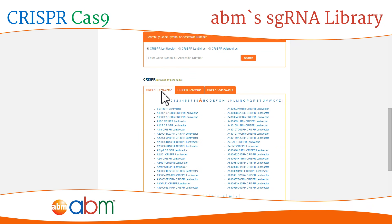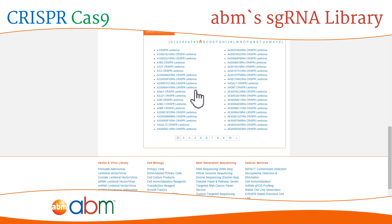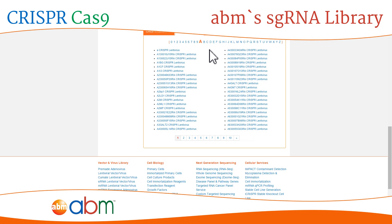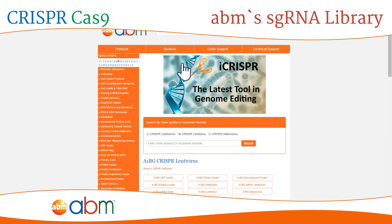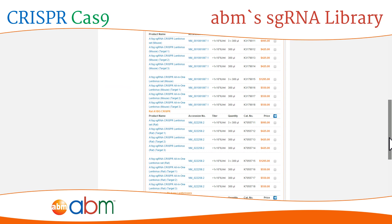Our sgRNAs are provided in different formats, including lentiviral vectors, packaged lentiviruses, adenoviruses, and even AAVs, which will be added soon. After choosing the vector you'd like to use for sgRNA delivery, the search bar allows you to search by gene symbol or accession number, or you can use alphabetical sorting to find your gene of interest. Once you've selected a gene, all available sgRNA products relating to your selection will be displayed. From here, you can order your sgRNA products.